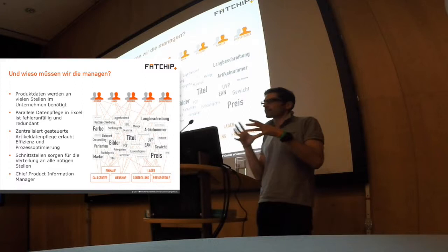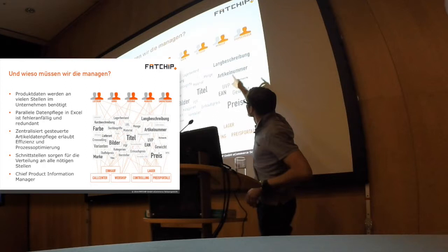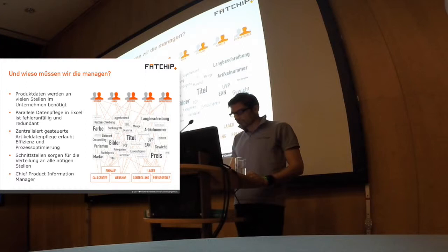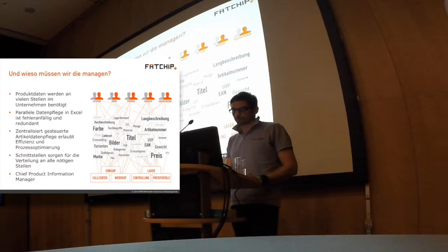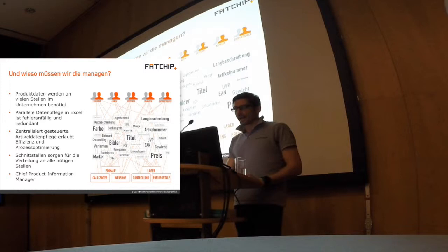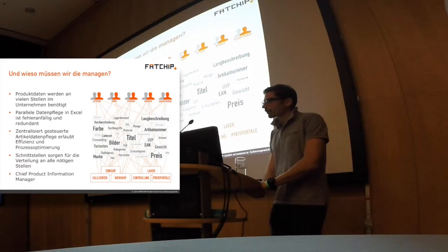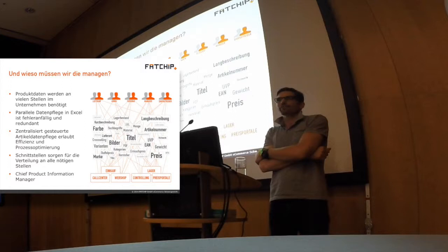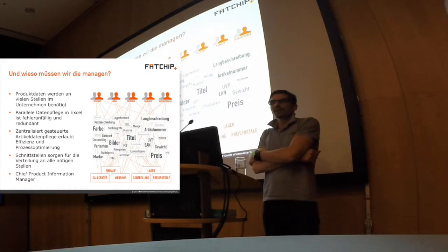We need a centralized position to administer all the data. If every one of these persons has their own Excel sheet, you don't get synchronized. One person has one part of the data, the other has another part, and no one has all the data. If someone updates something, the others don't know. If you get the process of product information management optimized, you can really save time and money. It would make sense to have a new position in shops called the chief product information manager, who might be as important as a human resources manager in a company.